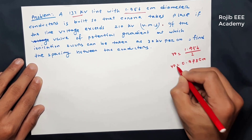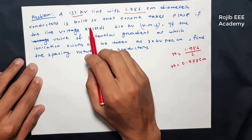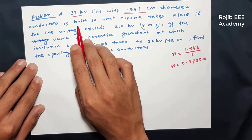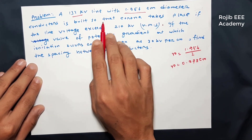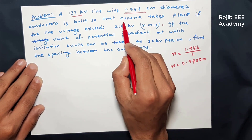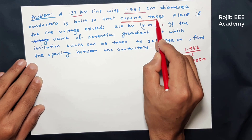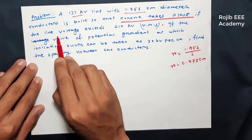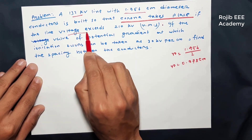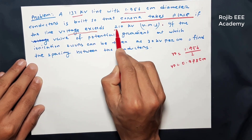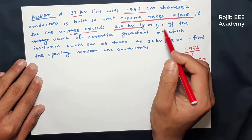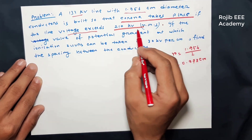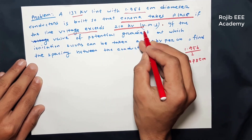This is a very important point. These conductors are built so that corona takes place if the line voltage exceeds 210 kV. That means corona is going to occur when the line voltage reaches 210 kV.